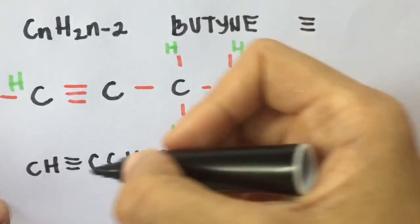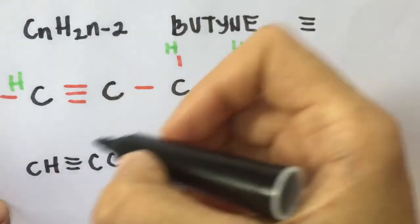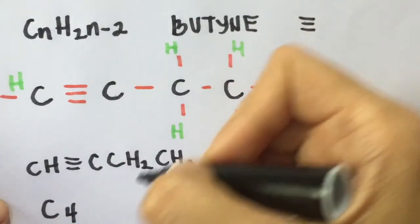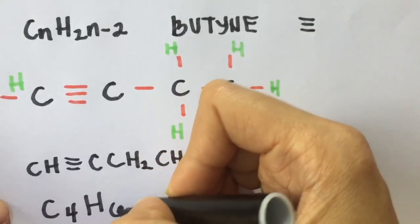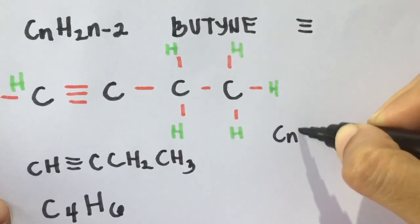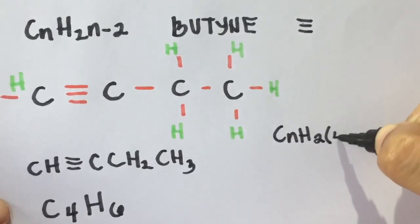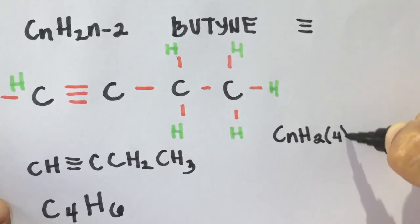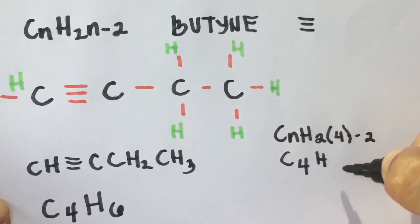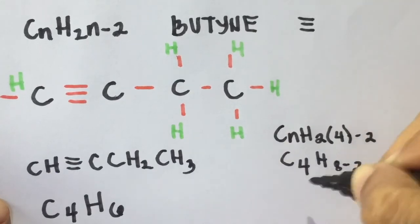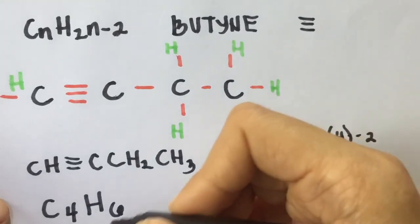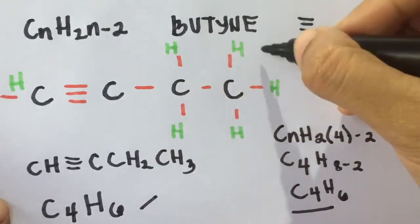So our molecular formula is, we have to count the number of carbons, of course four, and then the number of hydrogen: one, two, three, four, five, and six. So we have here C4H6. To check the general formula of an alkyne, C4 or Cn, H2 four minus two. So we have here C4H8 minus two. That is C4H6. So we have the same molecular formula. And that is butyne.